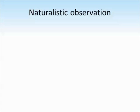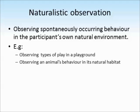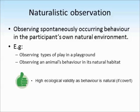Now let's look at the different types of observations. The first is naturalistic observation, where we observe behaviour which is spontaneously occurring in the participant's own natural environment. For example, we could observe children on a playground — that's where they would be anyway — or we could observe an animal's behaviour in its own natural habitat. This is a good method because it has high ecological validity if the study is covert. If the children aren't aware they're being observed, they're not likely to change their behaviour, and because they're in their natural environment we can generalise more to real life.